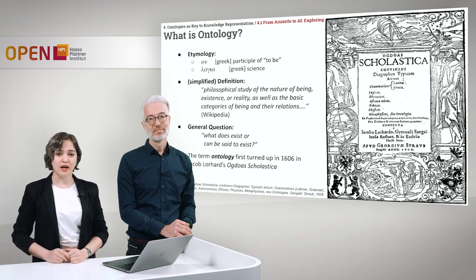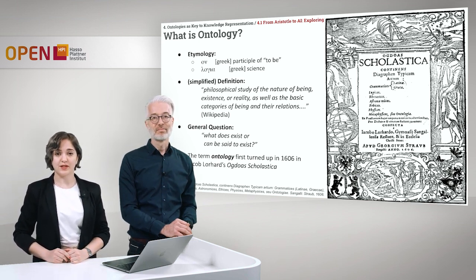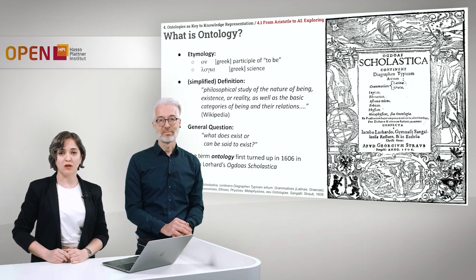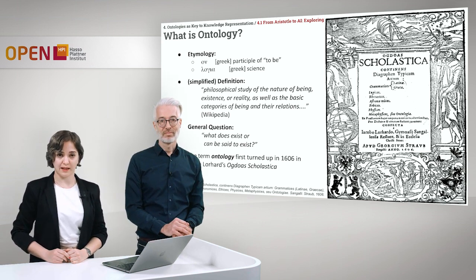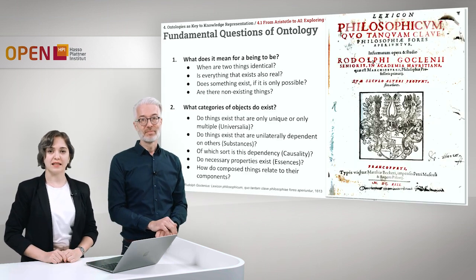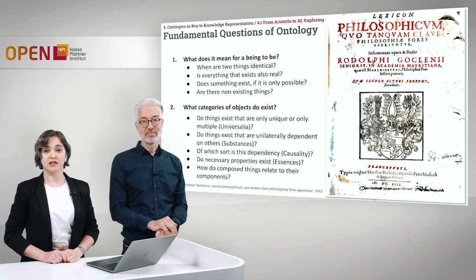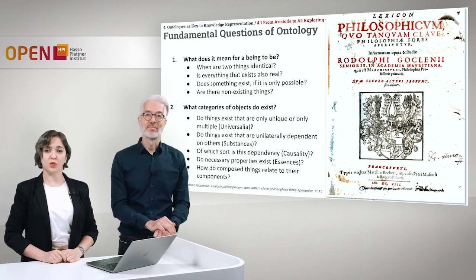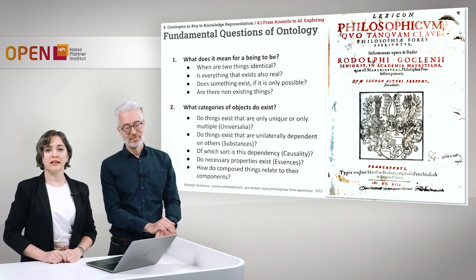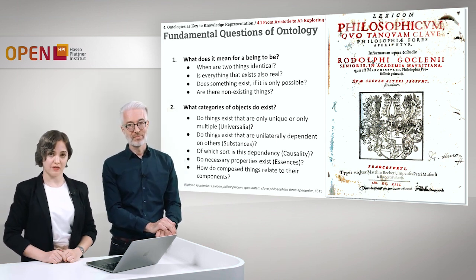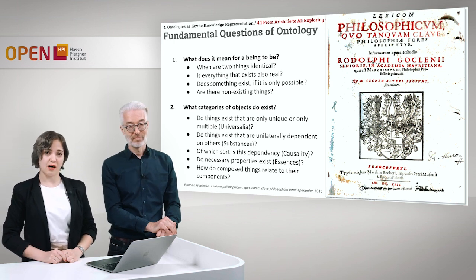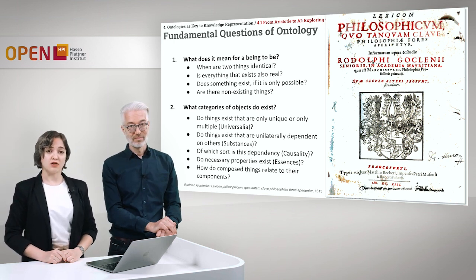This term for the first time appears in 1606 in a book called Ogdoas Scholastica by Jakob Lohrard. And then again in 1613, the term appears in a book by Rudolf Goekel called Lexicon Philosophicum, which is an encyclopedia of philosophy.